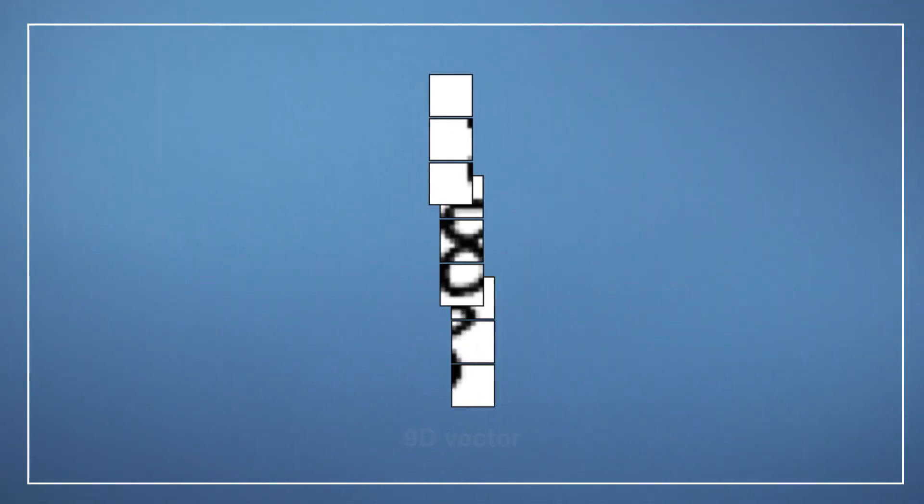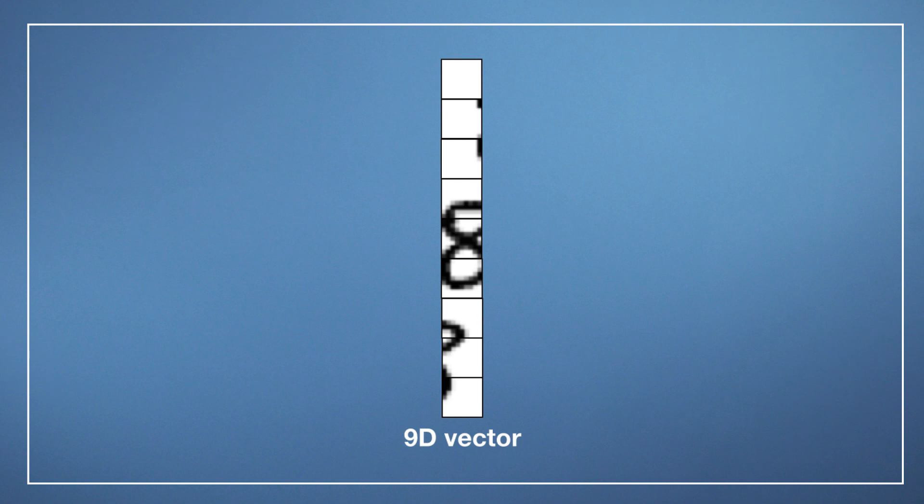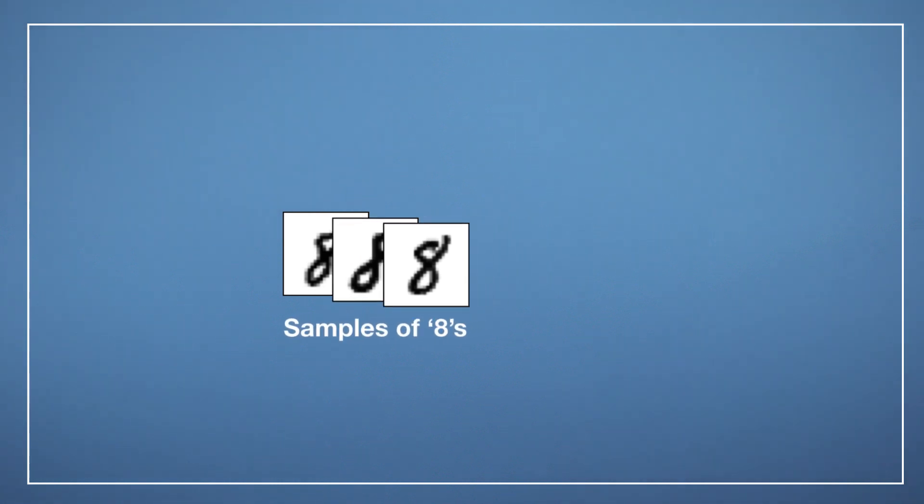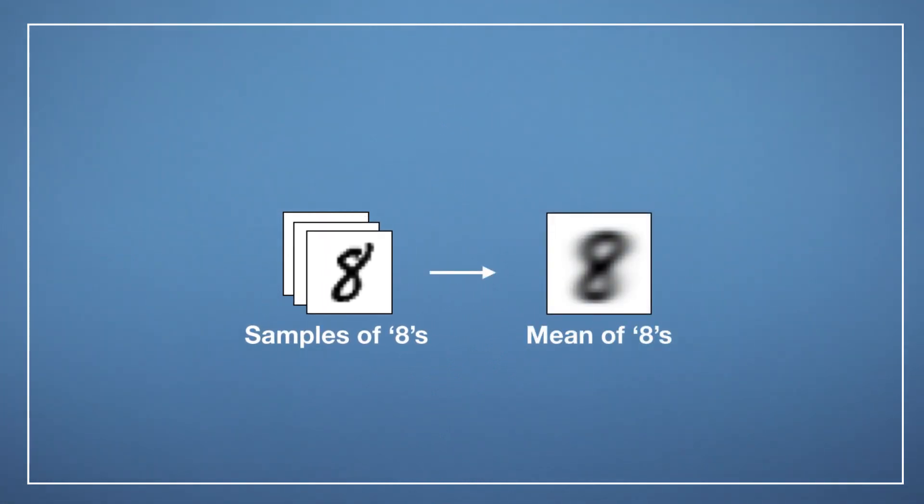We obtain the average 8 as follows. Remember that an image can be represented as a long vector in a high-dimensional vector space by stacking all pixels together. After transforming all images into these vectors, we take all image vectors in our dataset, add them together, and divide by the number of images in the dataset. This gives us the average image vector.